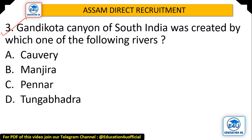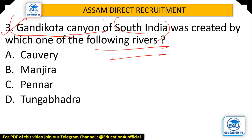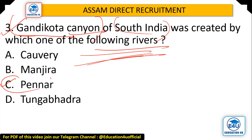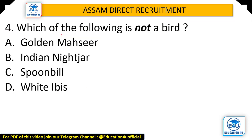Question: Gandhi Kota Canyon of South India was created by which one of the following rivers? Options: Kaveri, Manjira, Pennar, and Tunga Bhadra. The answer is Number C — the Pennar River. The Pennar River created this canyon in South India.